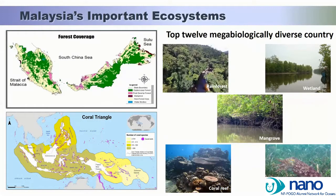Malaysia is one of the top 12 mega biologically diverse countries. We have large coverage of rainforest, wetland, mangrove, seagrass, and coral reef. As you might know, we are part of the Coral Triangle — a very important and amazing place for coral reef systems.